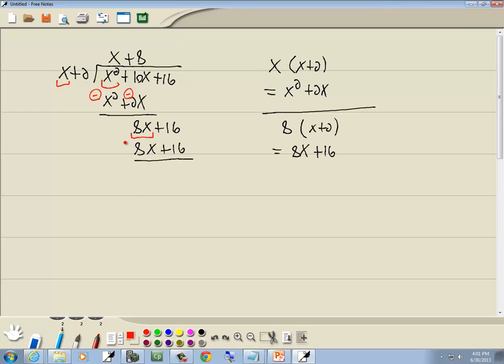Now we're going to subtract that line which means flip the signs. This one becomes negative, this one becomes negative. 8x minus 8x drops away, 16 minus 16 gives us 0. So our answer to this problem is x plus 8.